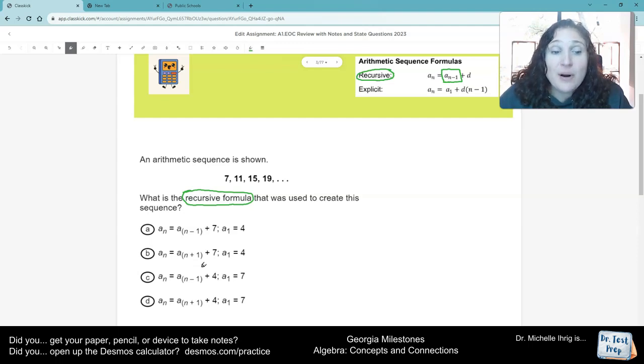So right away, before I even try the problem, it cannot be letter B because that has N plus 1 as the subscript. And it can't be letter D because that also has N plus 1 as the subscript. So really, I'm deciding, is it going to be letter A or is it going to be letter C?